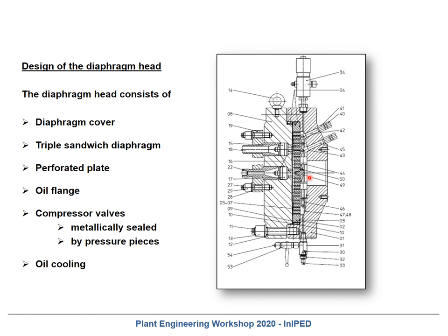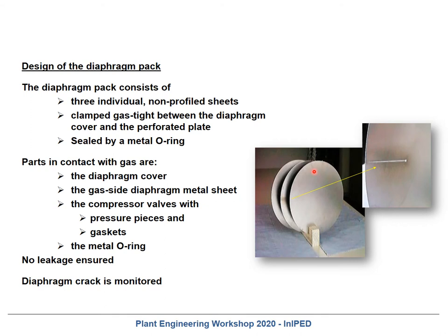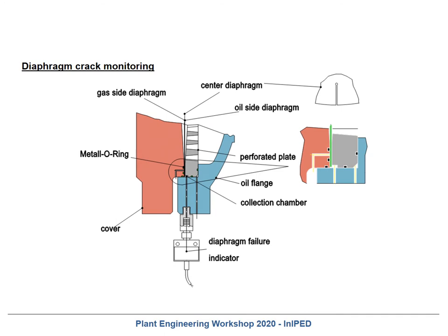The function of these diaphragm cracks will be explained here. This is the design of the diaphragm pack — there are three metallic plates, and this diaphragm pack consists of three individual non-profiled sheets. They are clamped between the diaphragm cover and the perforated plate, and are sealed on the gas side by a metallic O-ring and on the oil side by a Viton O-ring. Parts in contact with the gas are the diaphragm cover, the gas-side diaphragm metal sheet, the compressor valves with pressure pieces, the gaskets, and the metallic O-ring. With the correct bolt preload on all these metallic parts, no leakage is possible, but the diaphragm crack condition is typically monitored to ensure no contact between oil and gas.